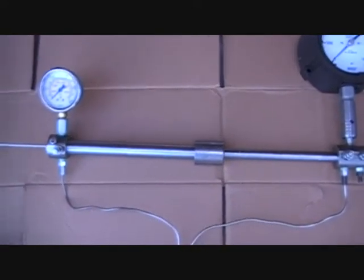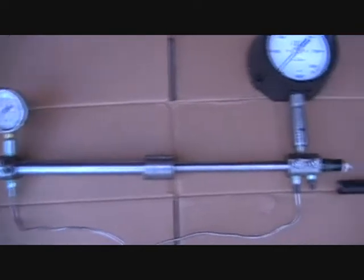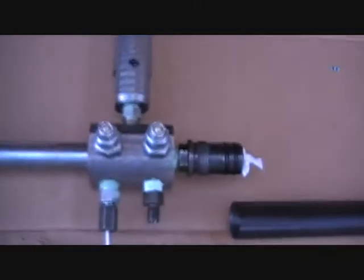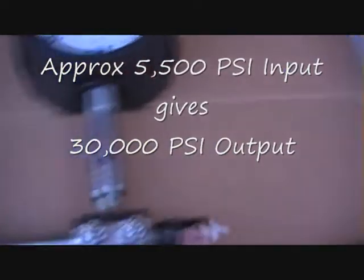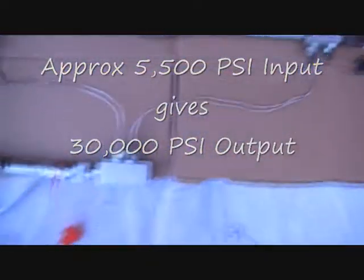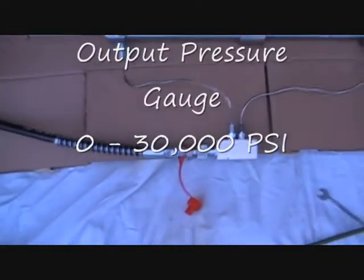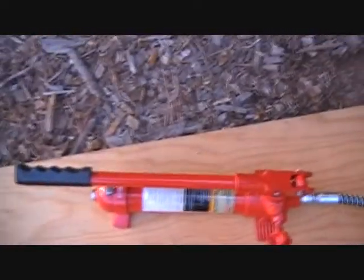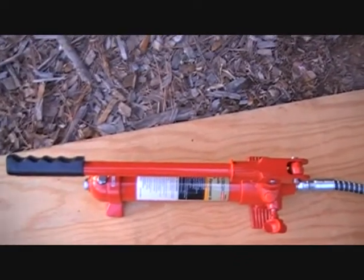So if I put in about 5,500 psi, I'm going to get out about 30,000 out the other end here, out this end right here. I have it supplied by a hydraulic hand pump. The hand pump will go up to about 8,500 psi, but that'll overload the system.